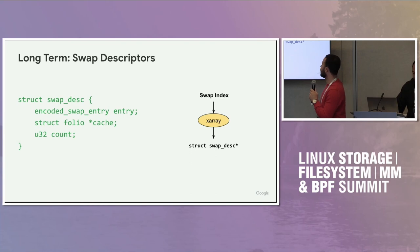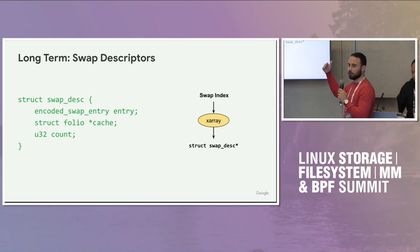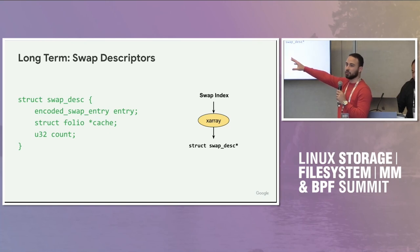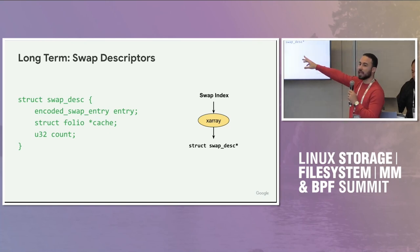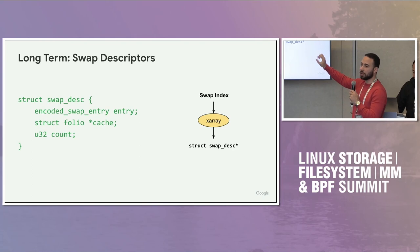An even longer-term idea is to go one step further with the abstraction. Instead of having the X-Array hold a swap entry or a ZSwap entry pointer, we can just have a swap descriptor. The swap descriptor can have the same encoded swap entry, which can be a swap slot in a swap file, a ZSwap entry, or whatever we need. We can directly store the swap cache here as just a folio pointer, and also put the swap count in there. All the core swapping code acts on a swap descriptor that's independent of the actual implementation — it could be ZSwap, swap file, or something else in the future.